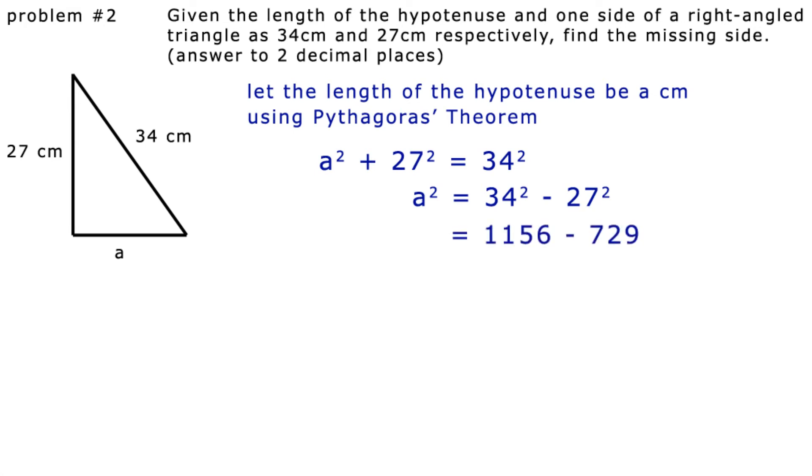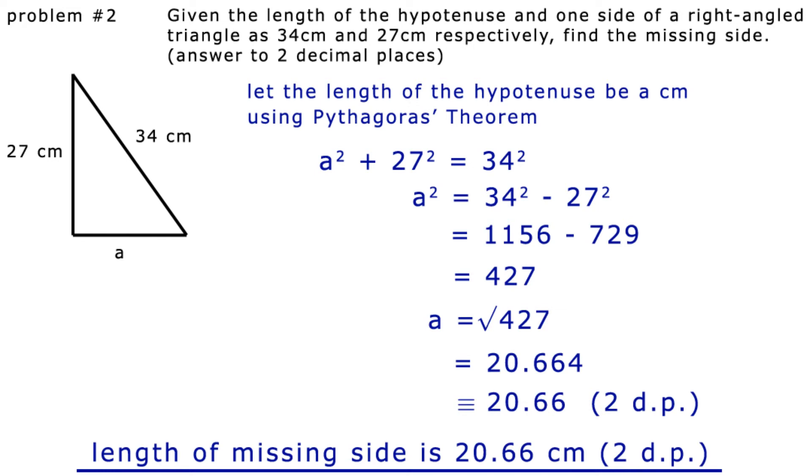So a squared is equal to 1156 minus 729, which gives us 427. So taking square roots on both sides, a is equal to the square root of 427. So a is equal to 20.664, which is 20.66 to two decimal places. So our answer is, length of missing side is 20.66 cm.